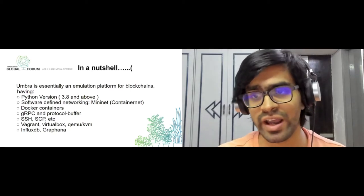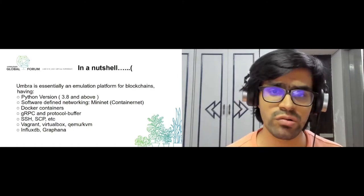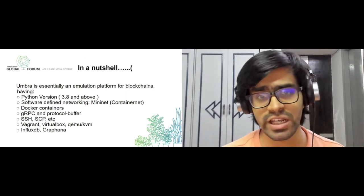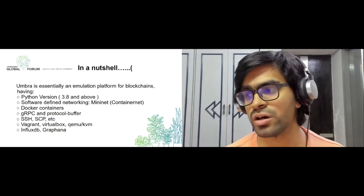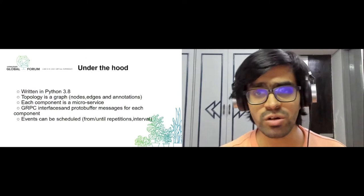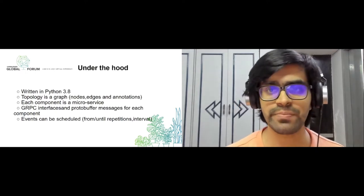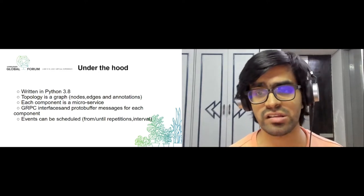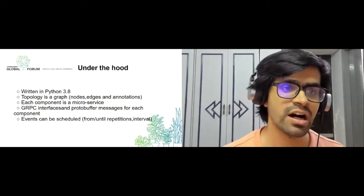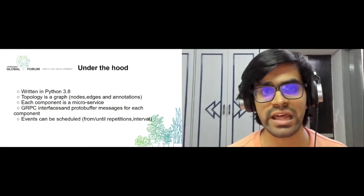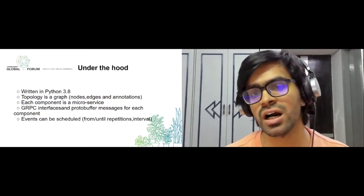You can check out Hyperledger Labs and find Umbra there to try experiments on any kind of blockchain. Under the hood, Umbra is written in Python 3.8. The topology we define is a graph — a data structure with nodes and edges. When we describe the entire network and experiment, the topology of Umbra is essentially a graph, and each component within Umbra is a microservice.